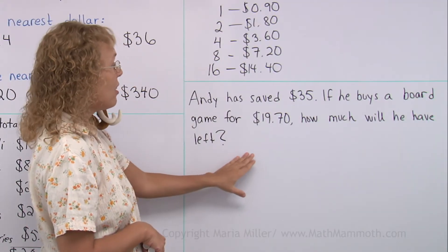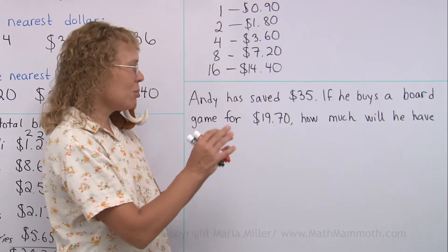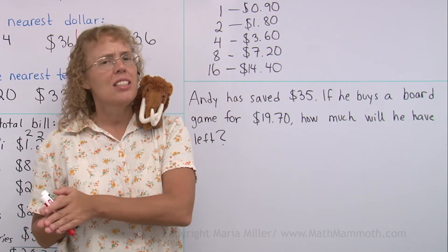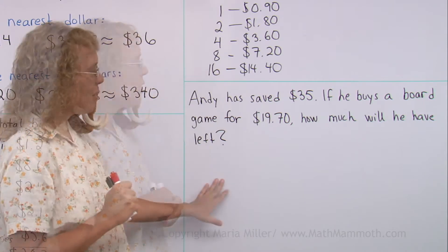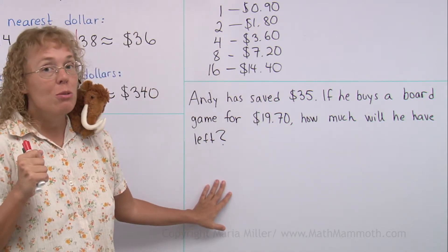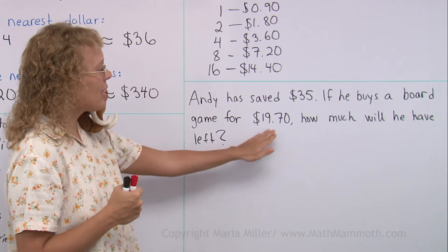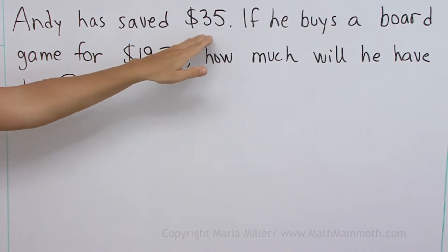He has saved $35. If he buys a board game for $19.70, how much will he have left? He has so much money, he buys an item — how much will he have left? That's a simple subtraction problem. But I also want to show you the method of adding up, which means we start with this number and add up until we reach $35.